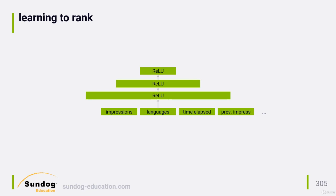The output of all this is used to predict the expected watch time of each video, which is ultimately what the ranking depends on. They don't want to optimize on predicting just clicks on a video, because this tends to surface clickbait videos that people aren't actually interested in. If a user actually watches a video all the way through, that's a stronger indication of it satisfying that individual's interests. YouTube is optimizing for minutes watched, not for clicks, and this decision alone has motivated professional YouTubers to upload longer and longer videos in an effort to increase that watch time metric.